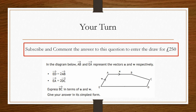Now it's your turn. To enter our monthly draw for our £250 prize giveaway, all you have to do is answer the following question correctly. It's based on a two-dimensional vector pathway — we need to express bc in terms of u and w, and we have this shape here. Have a read of the question and apply what we've just done in the two previous examples. To enter the draw, you must subscribe to the channel and comment the correct answer. Only valid subscribers with the correct answer will be entered into the draw.